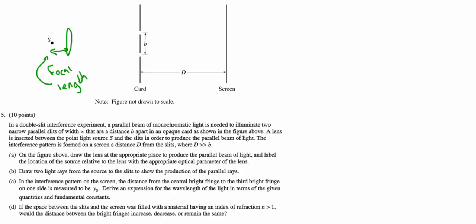Because now when we draw our rays of light for B, it says draw two rays from the source to the slits to show the parallel rays. We can show that there's an infinite number of these rays that are hitting this lens. But since they are all approaching this lens at the focal point, they will all refract parallel through each other.